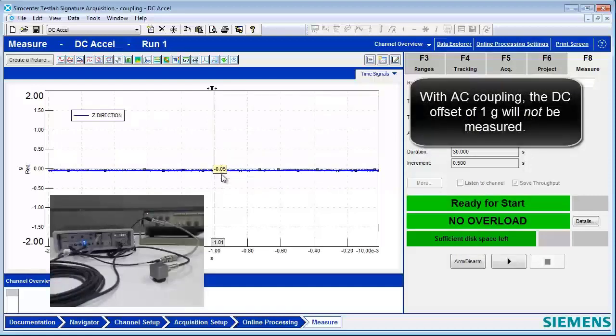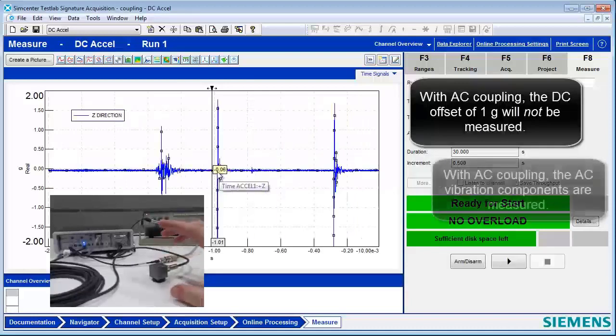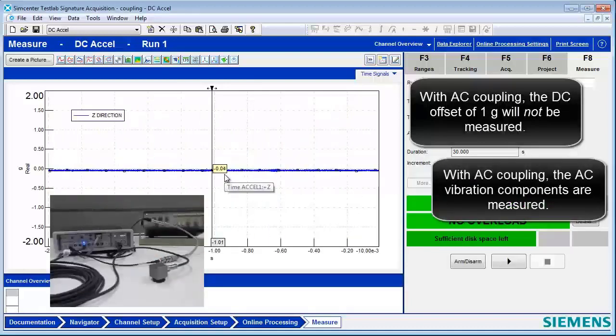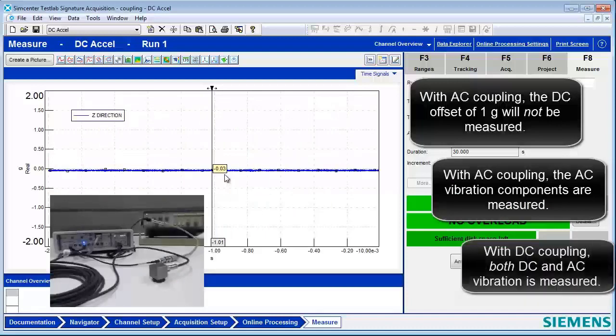Cool. But we can still see AC vibration? Yes, we can. Cool. AC coupling gets rid of any kind of DC offset. But if you have DC coupling, you can actually see both an AC and DC portion of the signal.